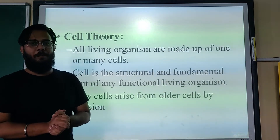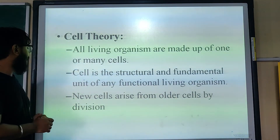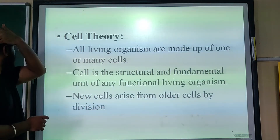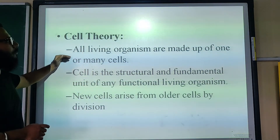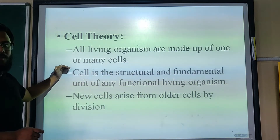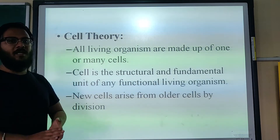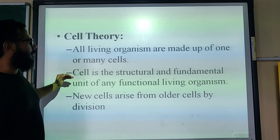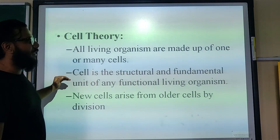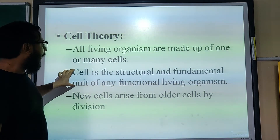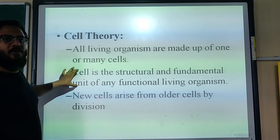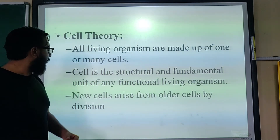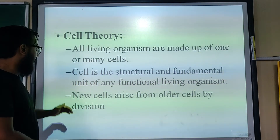Now let's talk about cell theory, which has three important parts. First: all living organisms are made up of one or more cells — animals, humans, and plants. Second: the cell is the structural and fundamental unit of any living organism. We have already discussed how cells give structure and provide functions to different organs in a body.